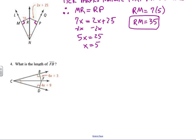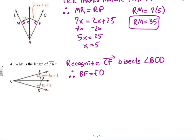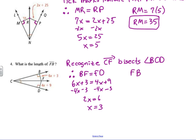Problem 4: What is the length of FB? Recognize that CF bisects angle BCD — that's the key. Therefore BF equals FD. Setting up: 6x + 3 = 4x + 9. Subtracting 3 and 4x: 2x = 6, so x = 3. FB = 6(3) + 3 = 18 + 3 = 21.